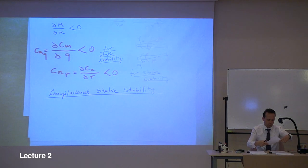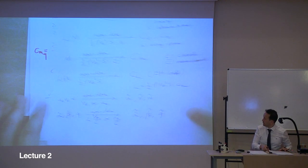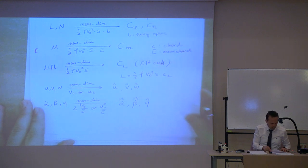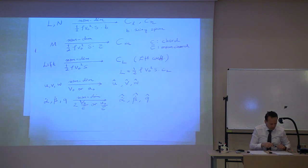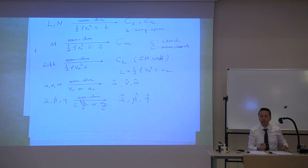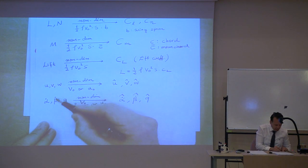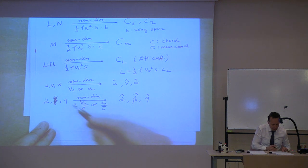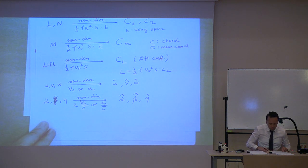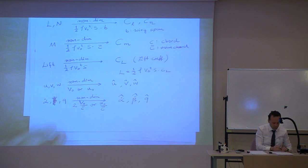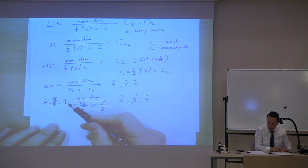Before we start, I just realized I made a small mistake here. Please correct it in your notes. Here we don't have beta dot. This is just alpha dot and Q, which are the variables in the longitudinal direction. Alpha dot and Q.